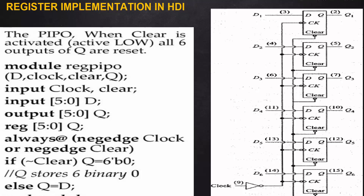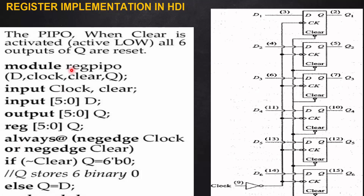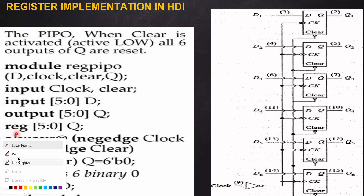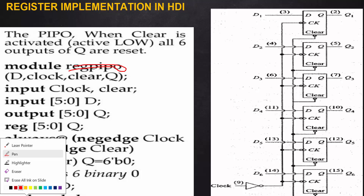We consider the circuit diagram of a parallel input to parallel output register with six flip-flops. This is a six-bit parallel input parallel output shift register, and we can name the module with any user-defined name — here it is named 'reg_pi_po'.